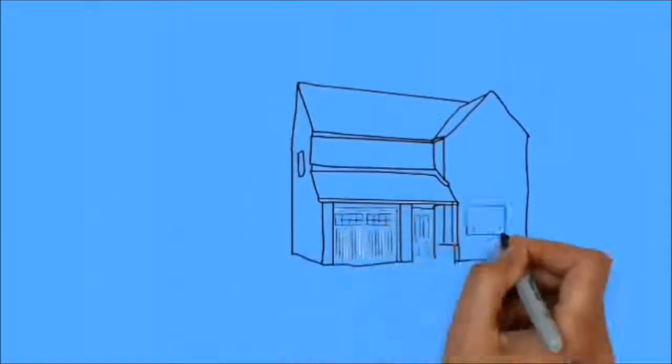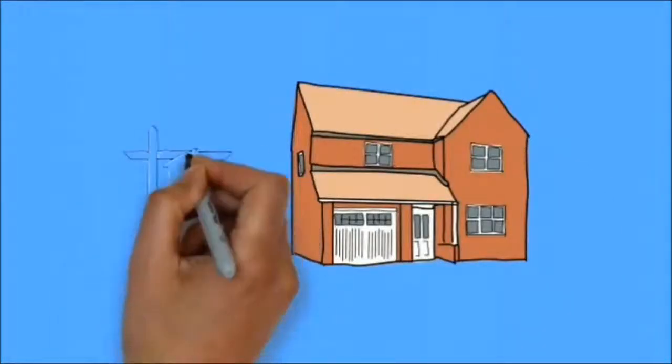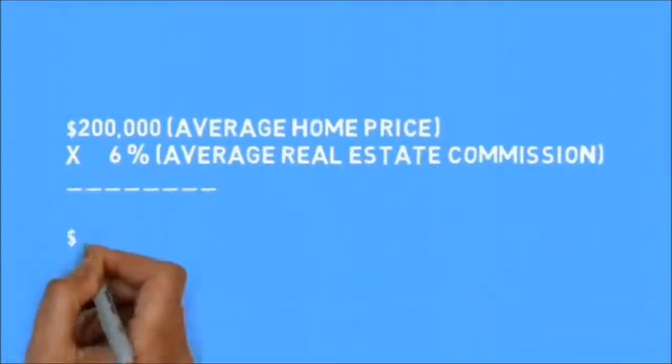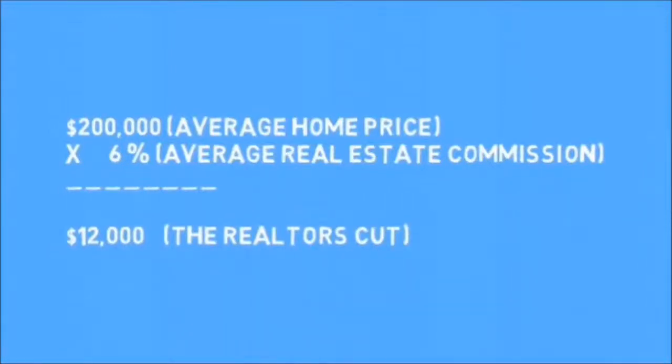When it comes time to sell your home and you choose to list with a realtor, you will have a real estate commission to pay. So let's look at the numbers: $200,000 average home price times 6% average real estate commission equals $12,000, the realtor's cut.